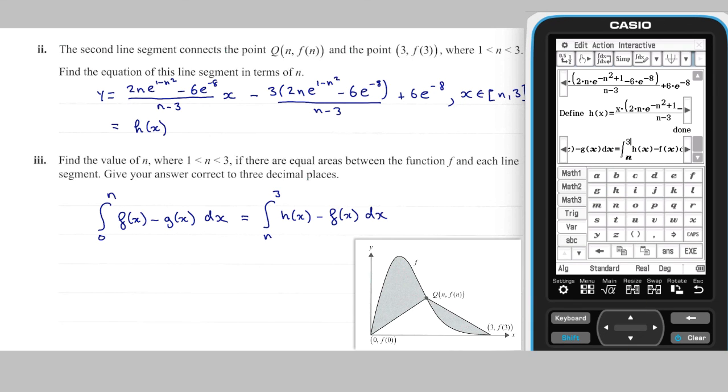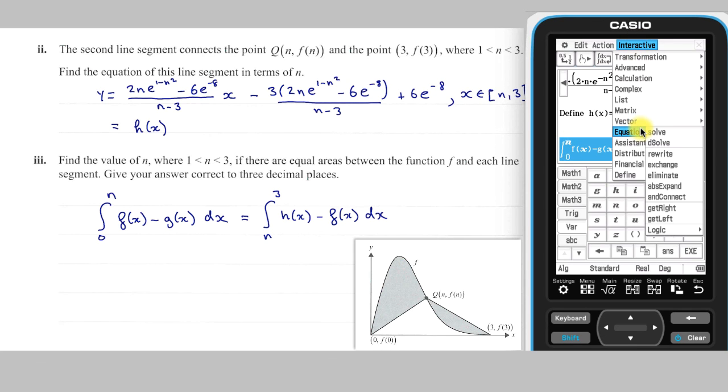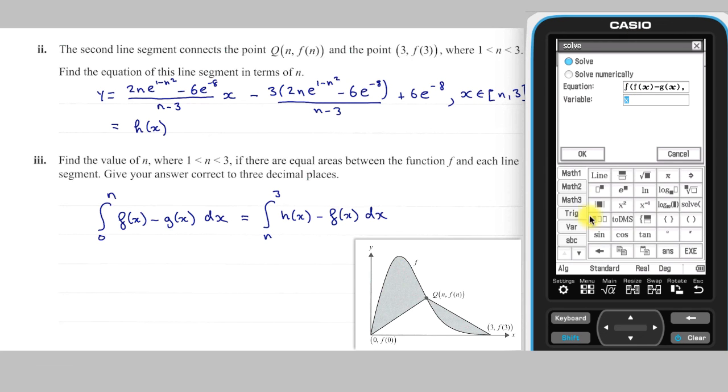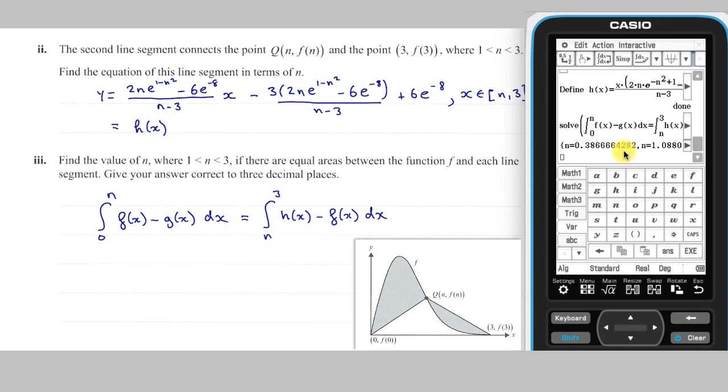This equation we need to solve for n. Given that n is between 1 and 3, our answer is 1.088 to three decimal places.